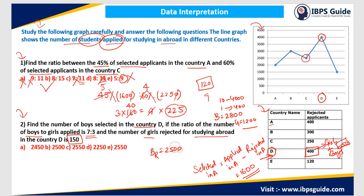So boys applied is 2800 and boys rejected is 250. They are asking for the number of boys selected. Selected boys equals applied minus rejected equals 2800 minus 250 equals 2550. That is Option C.